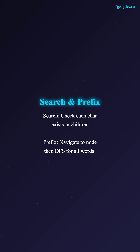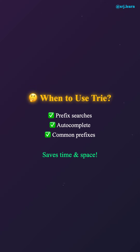The search method is similar: start at root, and for each character check if it exists in children. If any character is missing, the word doesn't exist. If you reach the end, check the 'is_end_of_word' flag. The prefix search method is a bit more involved — you first navigate to the prefix node, then perform a depth-first search to collect all words under that subtree.